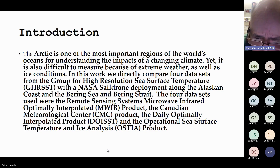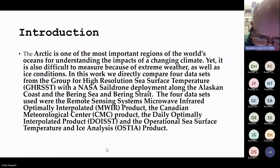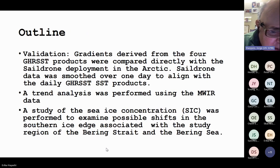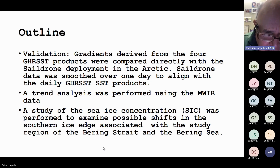The four datasets selected were: the microwave infrared optically interpolated dataset from Remote Sensing Systems (MWIR); the Canadian Meteorological Center's CMC product; the Daily Optimally Interpolated SST product (DOISST) from NOAA's National Center of Environmental Information; and the Operational Sea Surface Temperature and Sea Ice Analysis (OSTIA) from the UK Met Office. The outline will cover validations against the SAIL drone, a trend analysis using the MWIR data, and relationships with sea ice concentration from the OSTIA dataset.